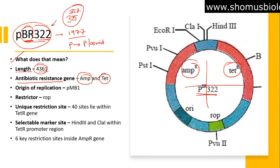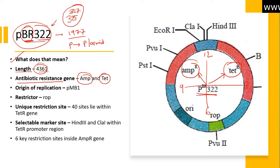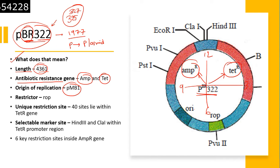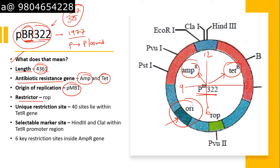Looking at the circular plasmid like a clock face — 12, 9, 6, and 3 — you can see the positioning of both tetracycline and ampicillin resistance genes in the direction of the arrow. The plasmid also has an origin of replication from pMB1, which is indicated on the map where pMB1 origin of replication is placed.